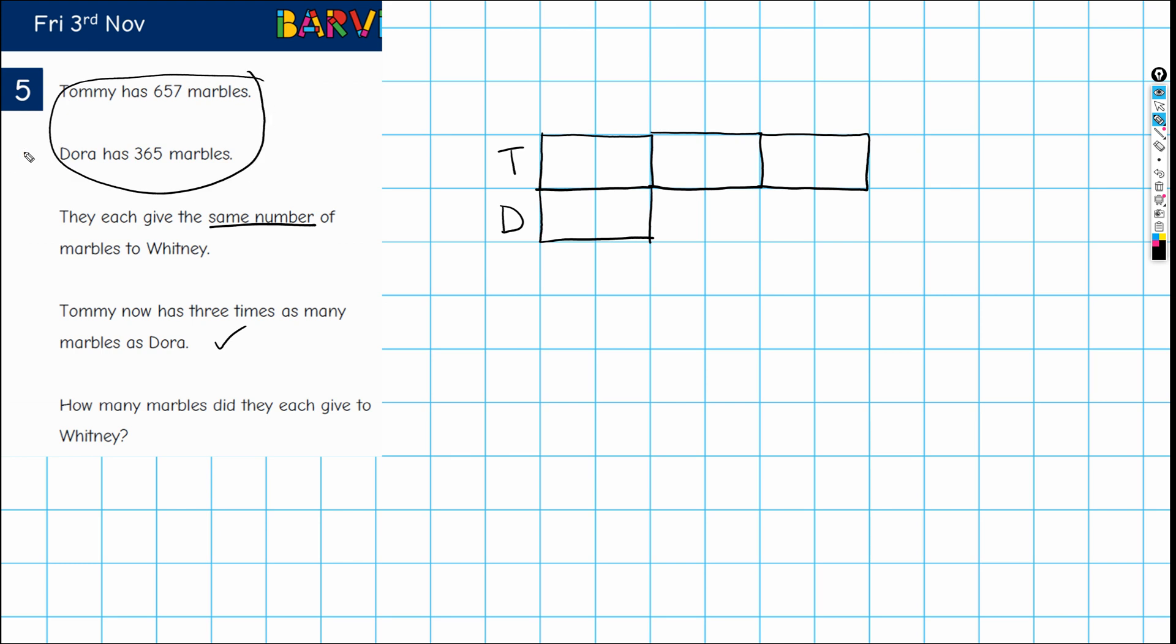Well, we have this part here. This is where we have actually got some numbers. Tommy has 657 and Dora has 365. So we want to know the difference because we are comparing Tommy with Dora, so we need to know the difference. So 657 and 365, and that gives us a difference of 292.